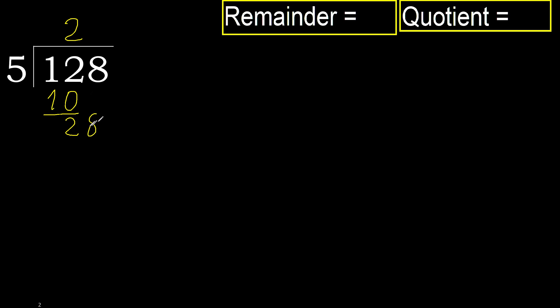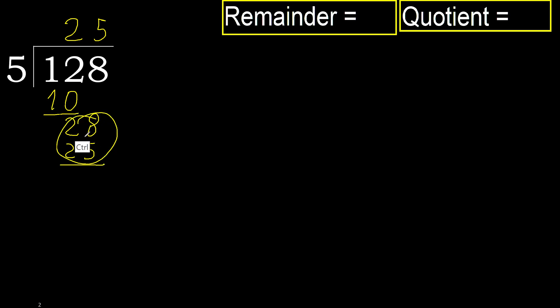Next, 28. 5 multiplied by 6 is 30 — 30 is greater. Multiply by 5: 25 is not greater. OK, subtract.